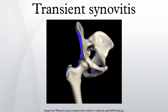Symptoms and signs: Transient synovitis causes pain in the hip, thigh, groin, or knee on the affected side. There may be a limp with or without pain. In small infants, the presenting complaint can be unexplained crying. The condition is nearly always limited to one side. The pain and limp can range from mild to severe. Some children may have a slightly raised temperature. High fever and general malaise point to other, more serious conditions.